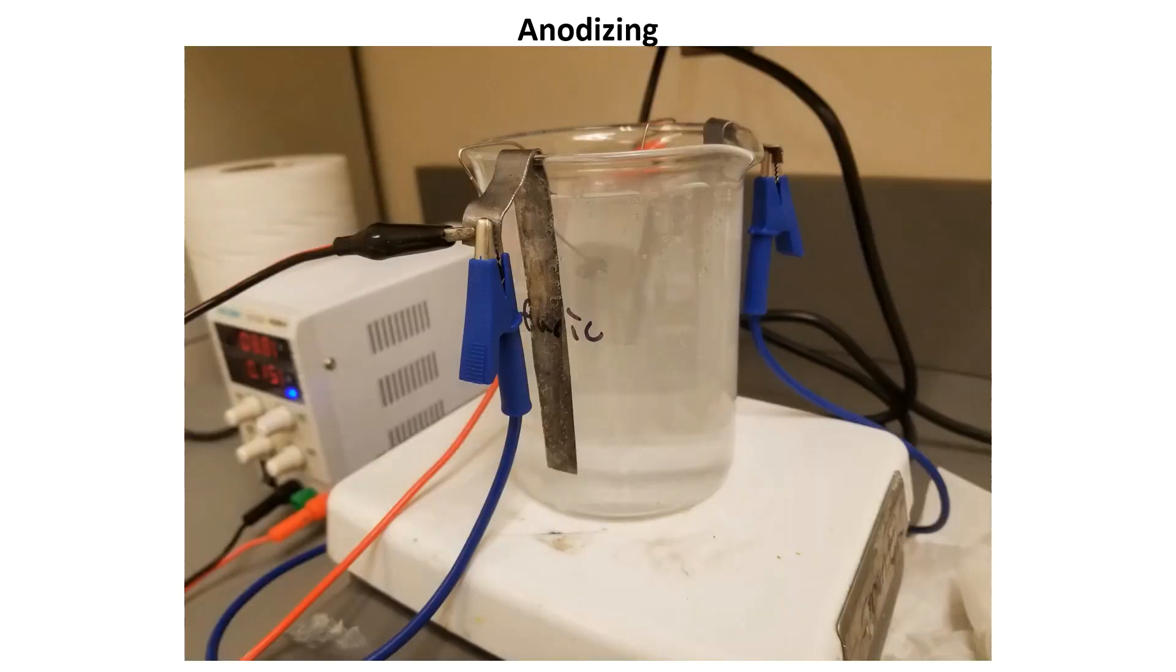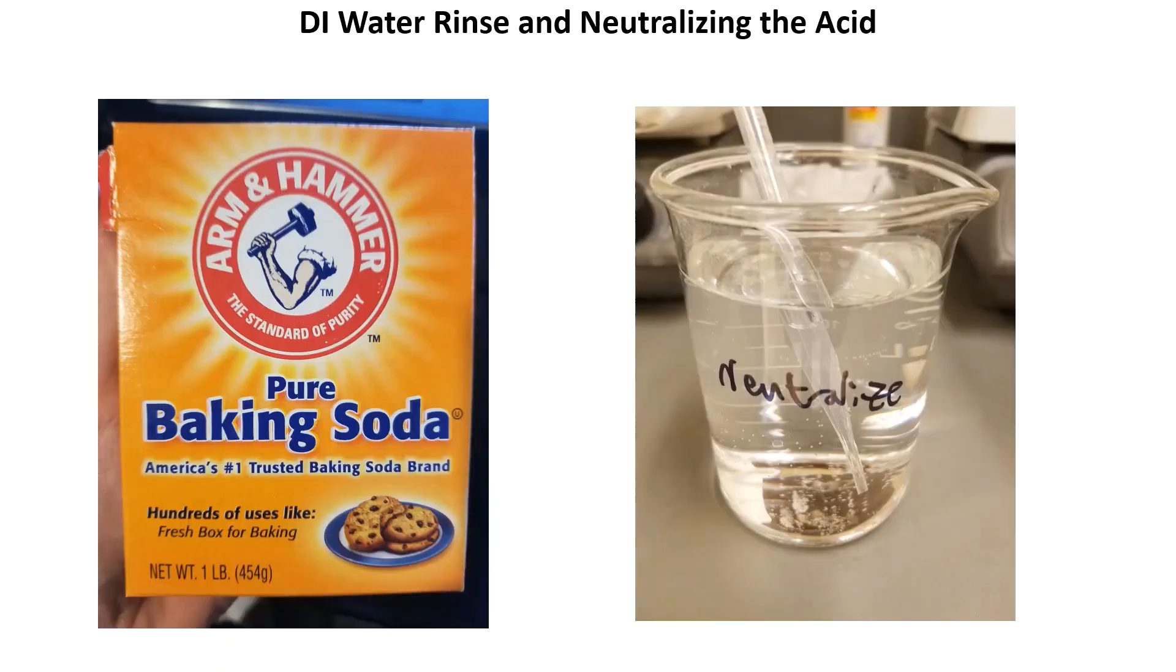With the current set, I let the anodizing run for 90 minutes as specified in the Caswell guide. The sulfuric acid solution was at room temperature and I used a magnetic stir bar to agitate it. The agitation is needed to circulate the electrolyte but also knock off the bubbles that form on the surface of the anode and cathode that would impede the reaction. The positive connection is attached to the anode workpiece and the negative is connected to the cathode plates. I attached my cathode plates in parallel with a jumper. This is opposite of electroplating where the workpiece is generally the cathode.